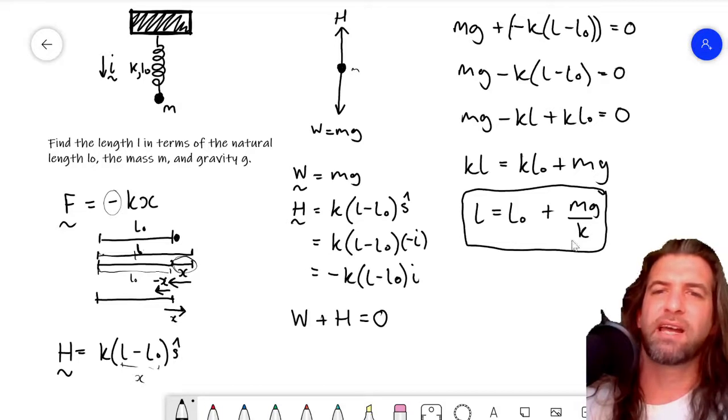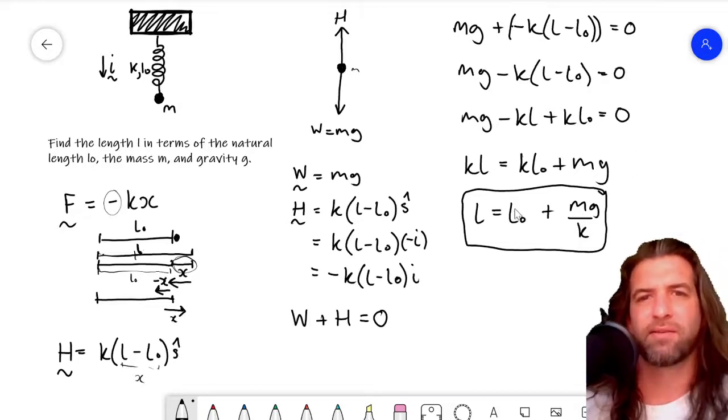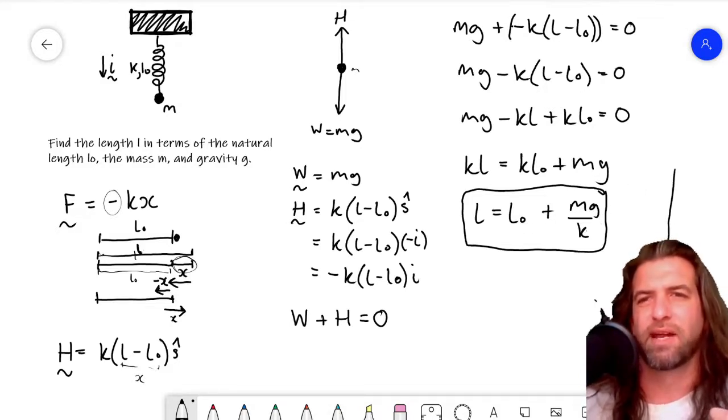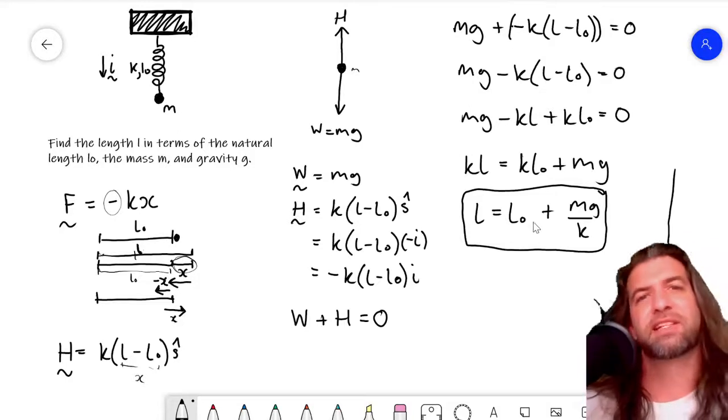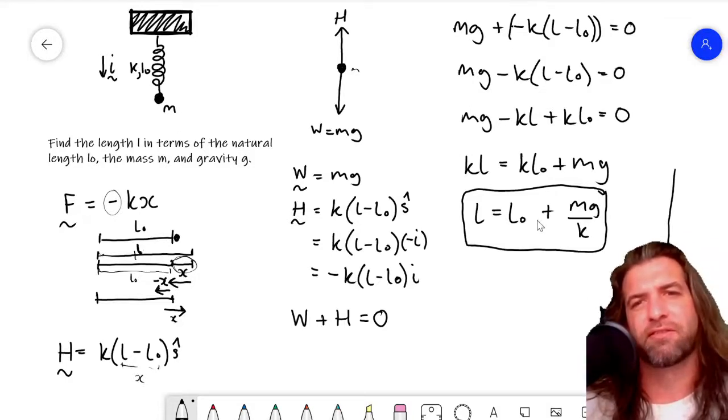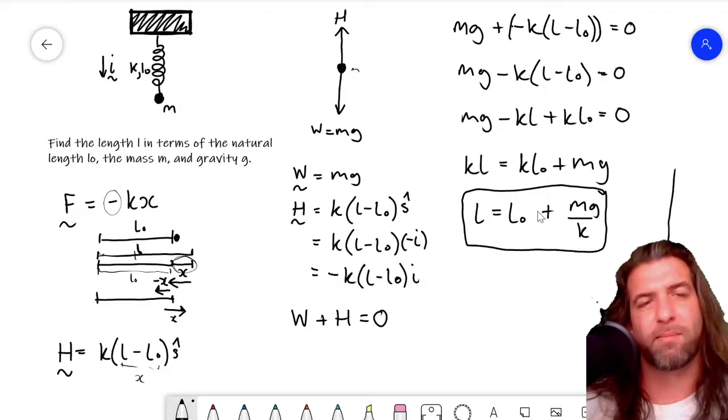And on the other hand, if k was constant and you increase the mass load, then that'd be the natural length plus a very, very high number. So it would extend a lot. And that is intuitive as well. And this is actually the equilibrium equation for a length of a mass on the spring.